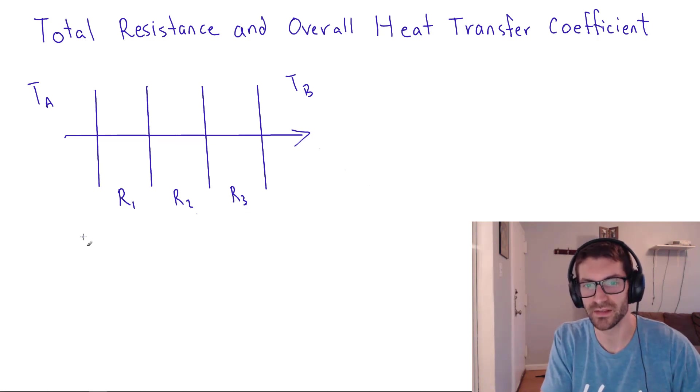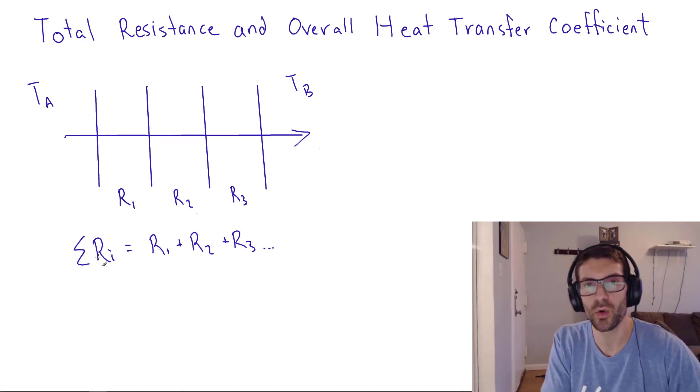And then we take the sum of those individual resistances. So we have summation, where the total resistance is R1 plus R2 plus R3, dot dot dot, for as many resistances as there are. And then once we get that total resistance,